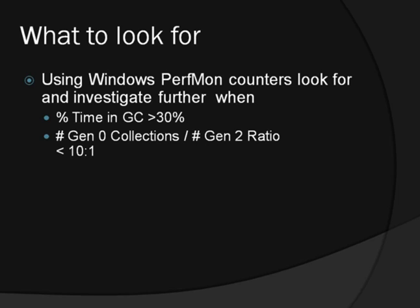Another interesting statistic is the number of Gen0 collections against the number of Gen2 collections. In a healthy application, there should be approximately a ratio of 10 Gen0 for every one Gen2 collection. If you're getting a significantly lower ratio than this, you're getting a large number of full collections, which is really going to impact performance. It could be that you have references holding onto objects for longer than necessary, causing them to be promoted.